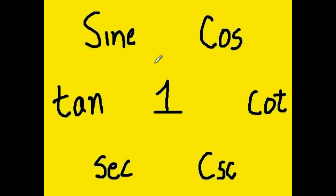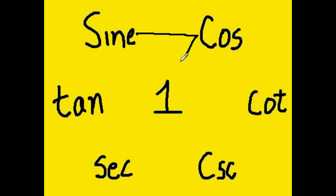So now let's do some trigonometric identities. All you have to do is draw the number seven. It's that simple. Here we go. One, two. There we go. There's the number seven.